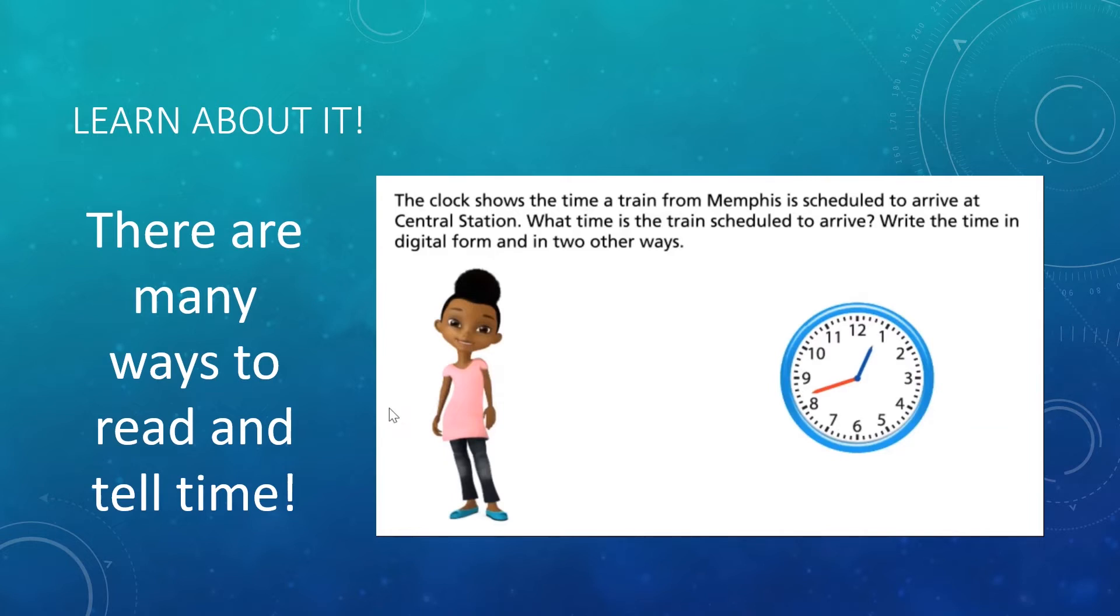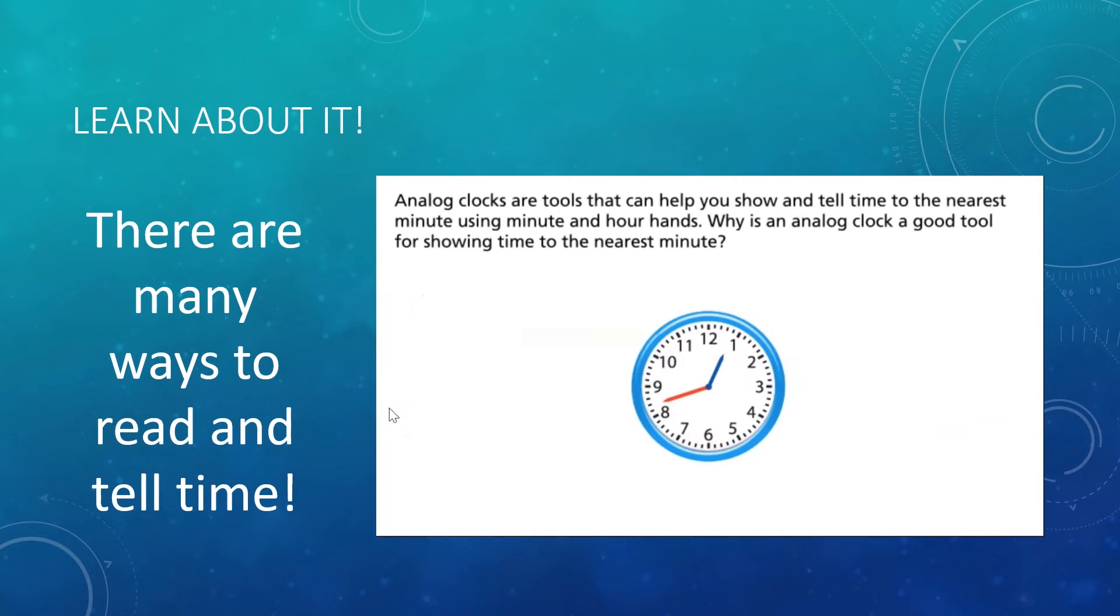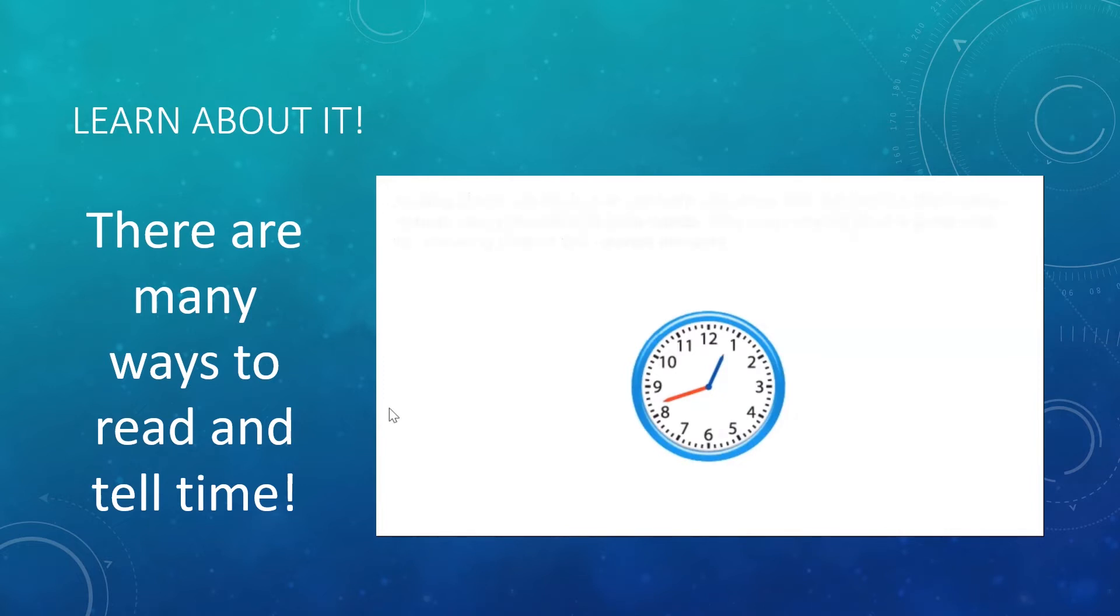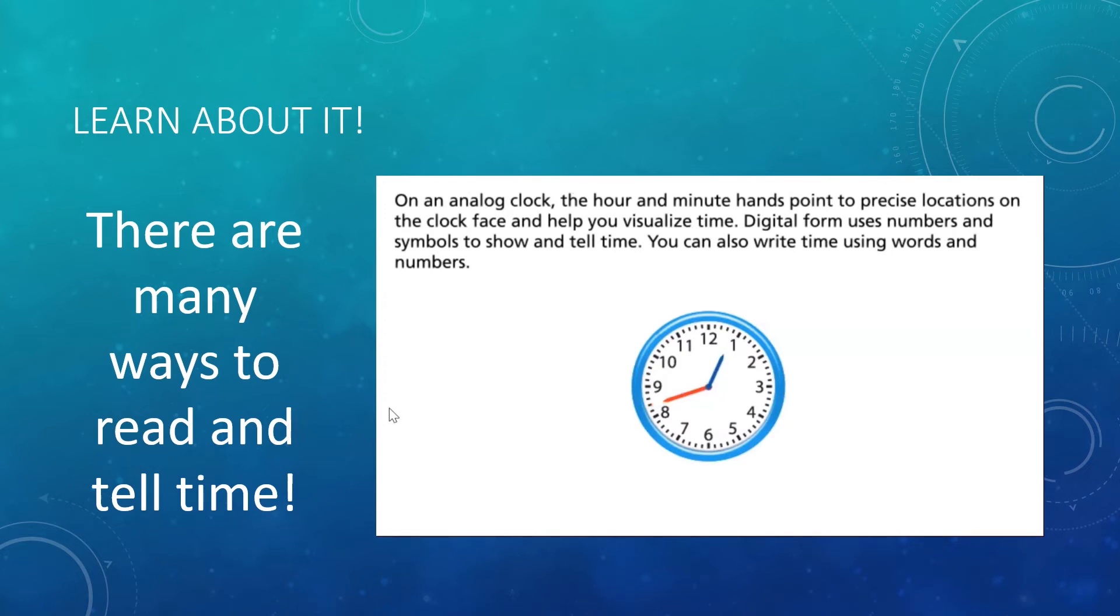Remember, our hour hand is the shorter one, and that is between 12 and 1. What does that tell you about the time? Analog clocks are tools that can help you show and tell time to the nearest minute using minute and hour hands. On an analog clock, the hour and minute hands point to precise locations on the clock face and help you visualize time. Digital form uses numbers and symbols to show and tell time. You can also write time using words and numbers.